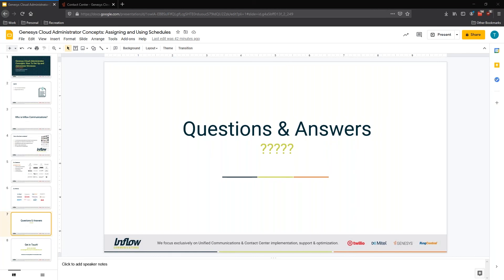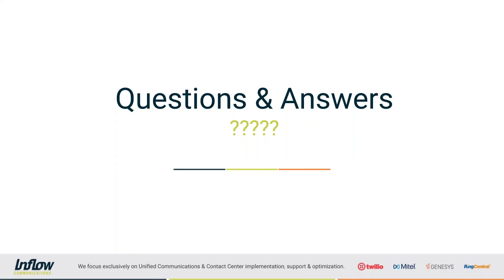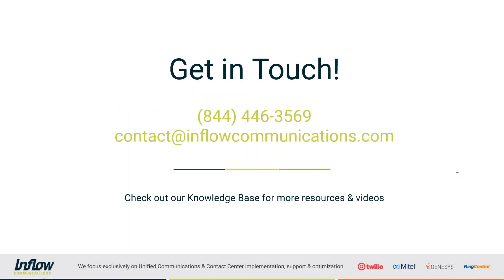I'd like to open it up to questions. It doesn't look like we have any direct questions at this point, but I'll give you a moment. If any come in before the end I will answer those. If you come up with questions after the fact, you can always get in touch with us — give us a call at 844-446-3569 or send an email to contact@infocommunications.com.